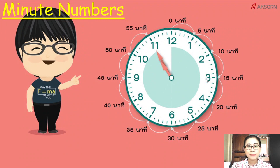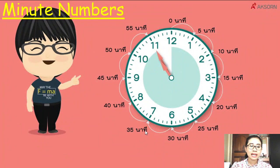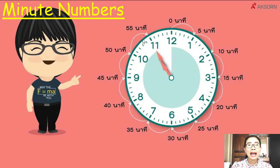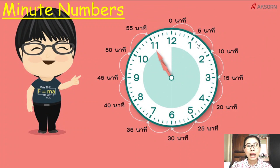ถ้าเข็มยาวชี้เลข 1 หมายความว่า 5 นาที, 2 = 10, 3 = 15, 4 = 20, 5 = 25, 6 = 30, 7 = 35, 8 = 40, 9 = 45, 10 = 50, 11 = 55 นาที, 12 = 60 นาที หรือ O'Clock.